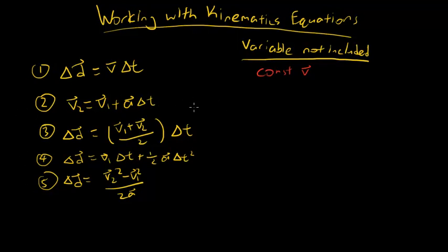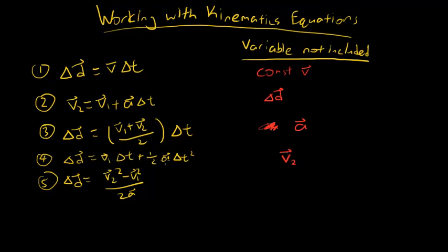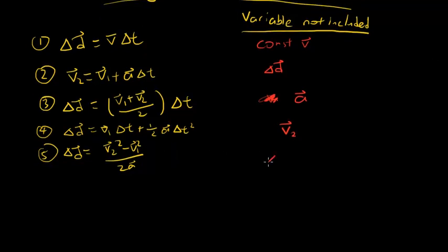For constant acceleration equations: use equation two when there is no displacement in the question. Use equation three when acceleration is not involved — since none of those variables in equation three include acceleration. Use equation four when v2 is not part of the question, since equation four only contains v1, time, acceleration, and displacement.